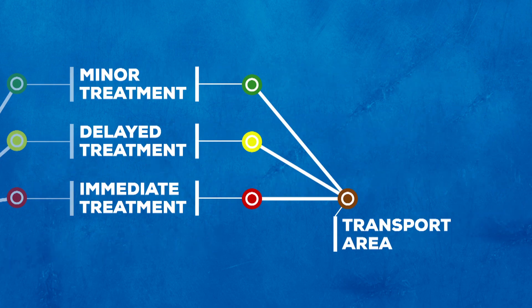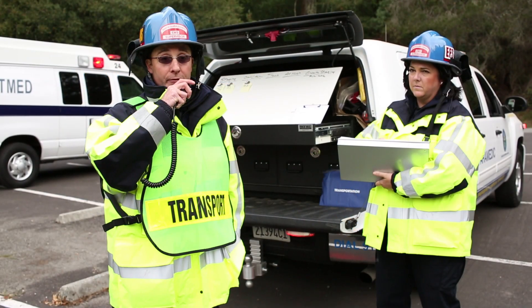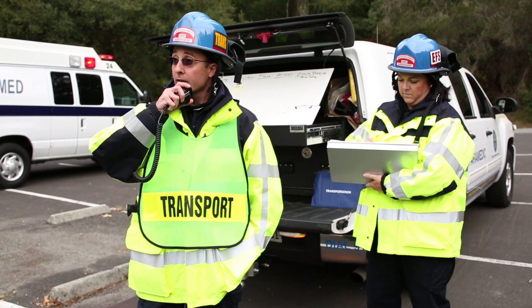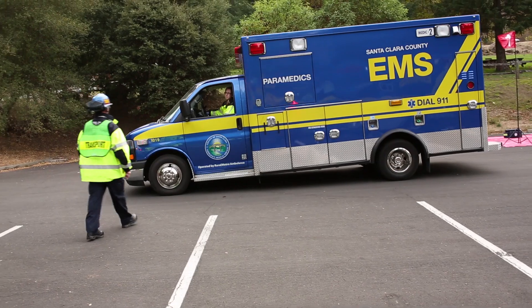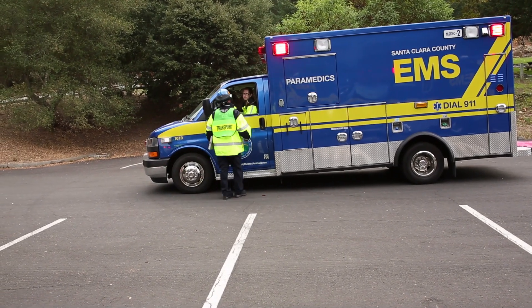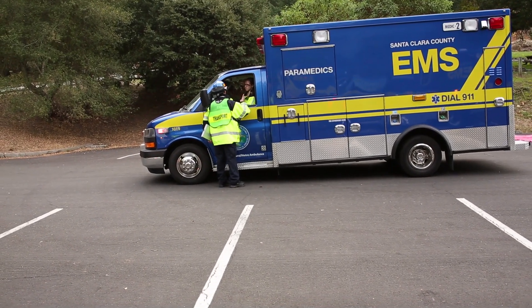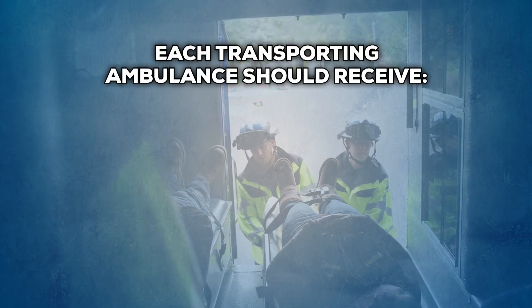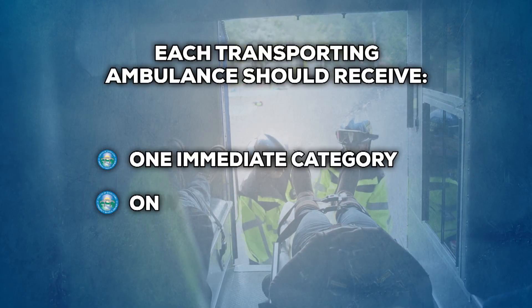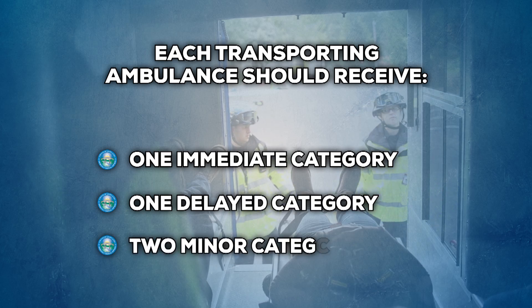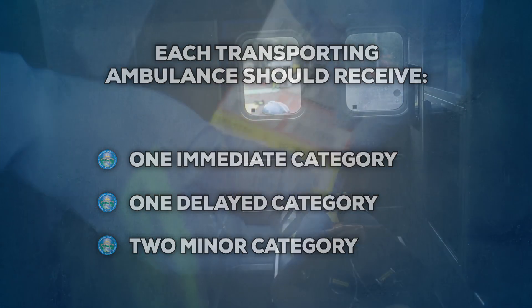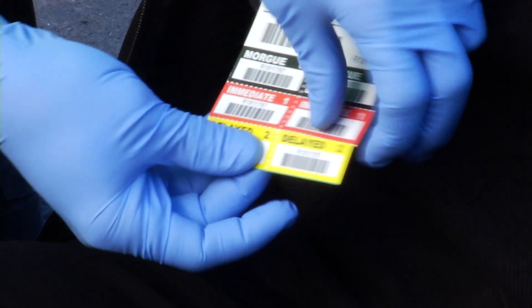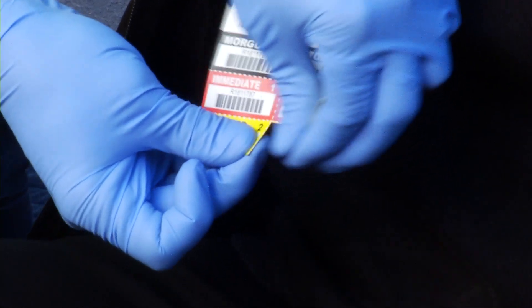The transport area is where ambulances will respond to from staging. This area requires a transport group supervisor and, if appropriate, a patient loading manager to ensure that every transporting ambulance receives the correct number and START category of patients. Each transporting ambulance should receive at minimum one immediate, one delayed, and two minor category patients. The transport group supervisor must tear off one of the two triage category tags and keep it to record which patients went to which hospital.